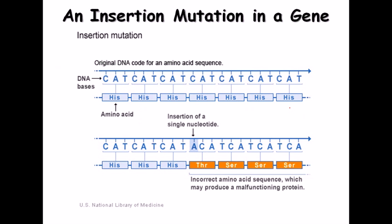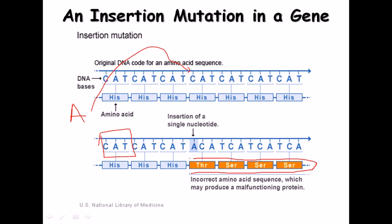The third kind is insertion mutation at the DNA level. Here, no substitution happens — instead, a new nucleotide (say adenine) is inserted between existing nucleotides. This addition changes the open reading frame — the triplet codon framework. As a result, all downstream codons are read differently from the mRNA template during translation, producing a totally different protein which is likely malfunctioning.